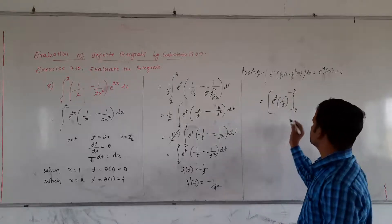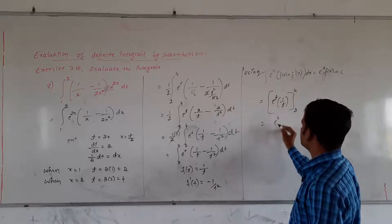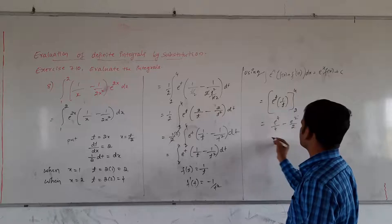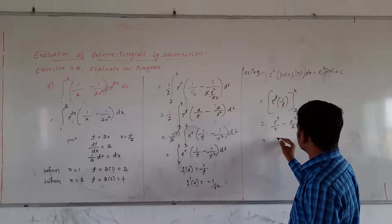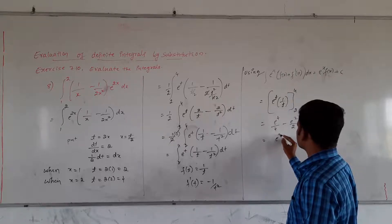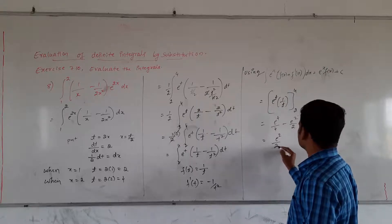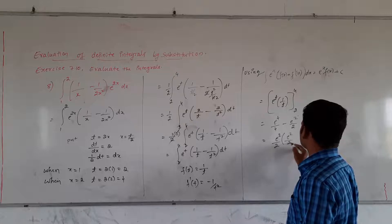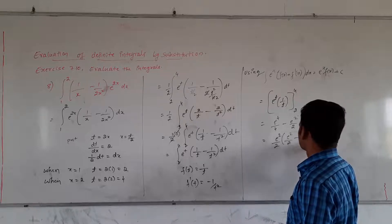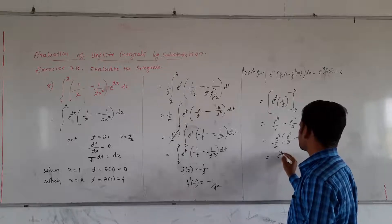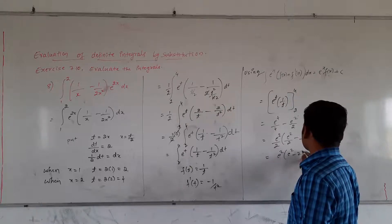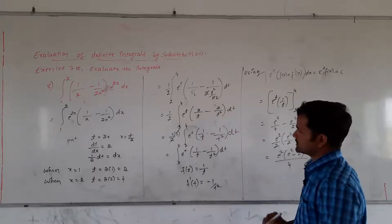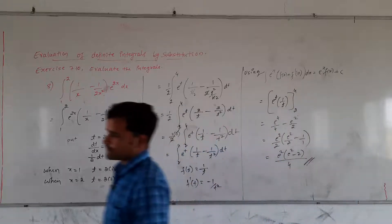Using the formula: integration of e raised to x into [f(x) + f'(x)] dx equals e raised to x into f(x) plus c. In the same way, here it is in the standard form — we use this as e raised to t into f(t), which is 1/t, from 2 to 4. Substituting the upper and lower limits: e raised to 4 divided by 4 minus e raised to 2 divided by 2. Taking e²/2 as common, we get e²/2 · (e² - 2) / (2 × 2), which simplifies. This is the answer for problem number 8.